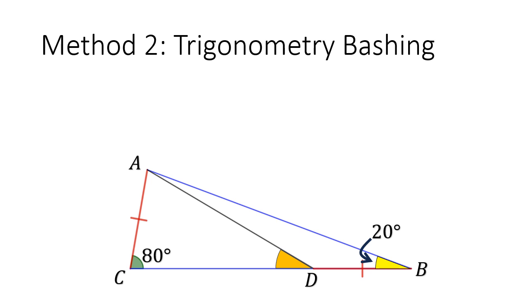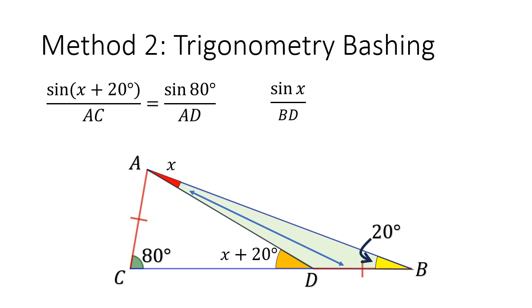For example, trigonometry bashing goes something like this. Consider triangle ACD. You apply the sine rule. You see that sine over the opposite side of AC is equal to sine over the side AD. Next you consider triangle ABD instead. Sine rule here tells you that sine of X over the opposite side BD, where BD is equal to AC, is equal to sine of 20 over the opposite side of AD.